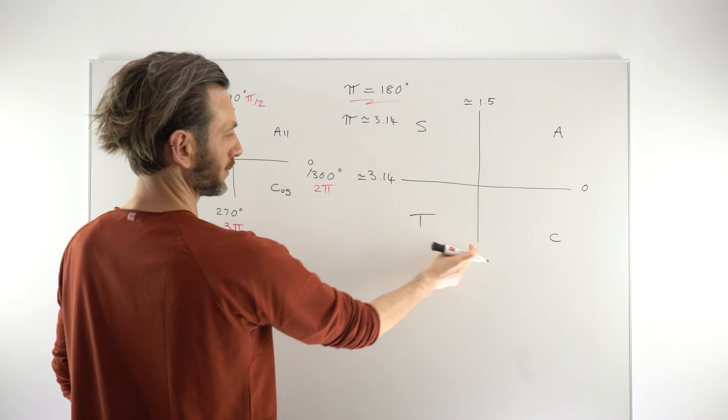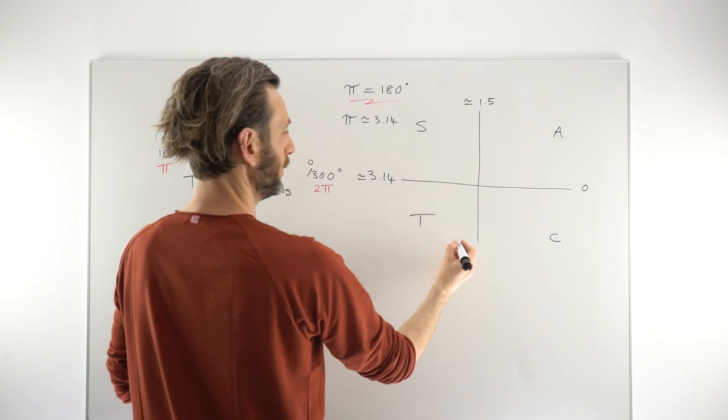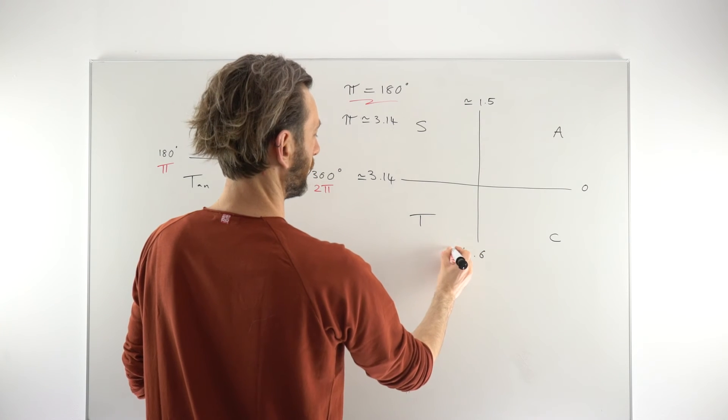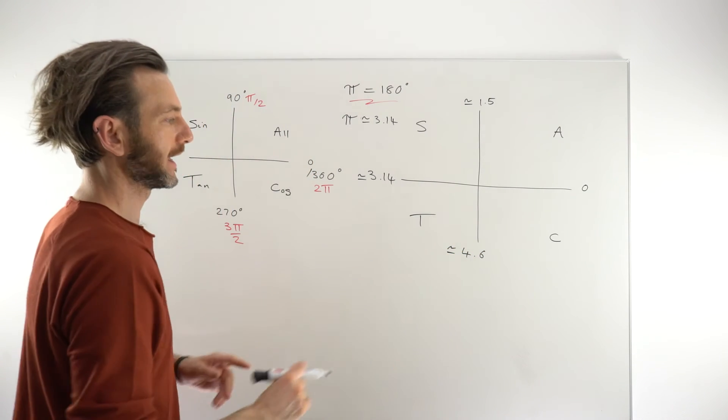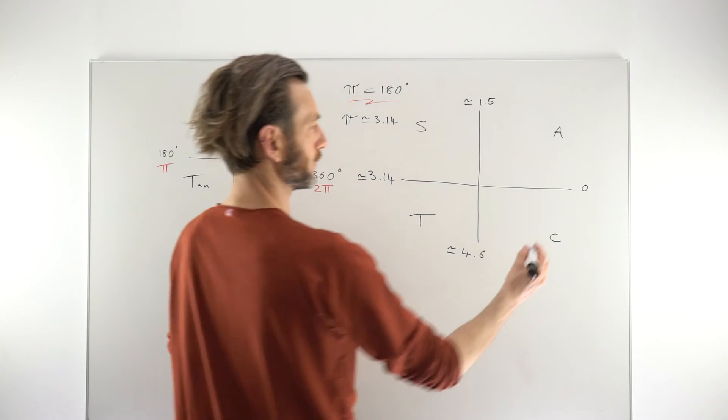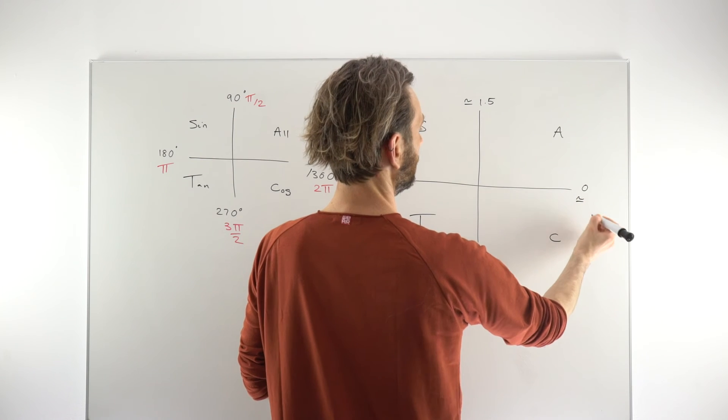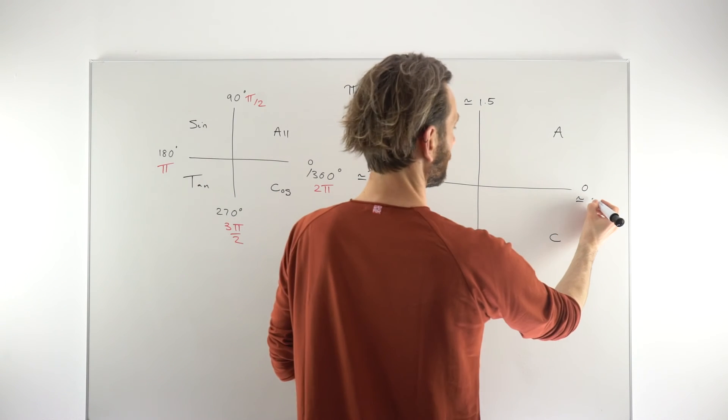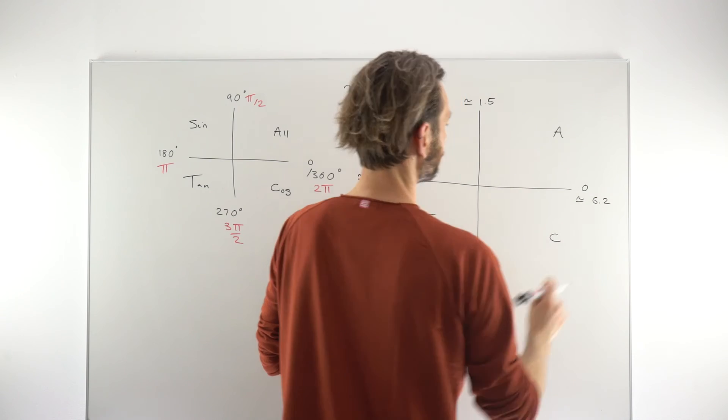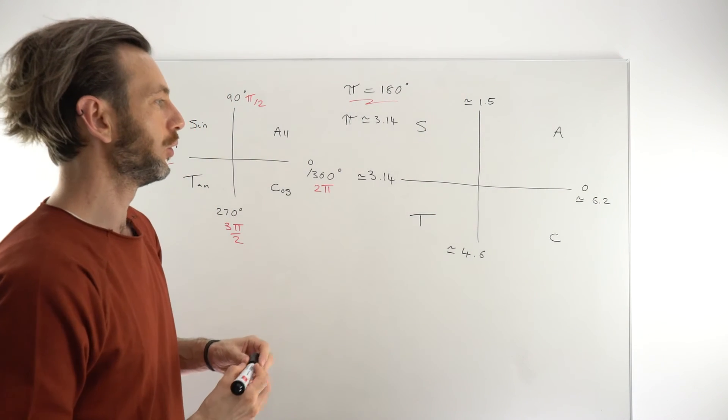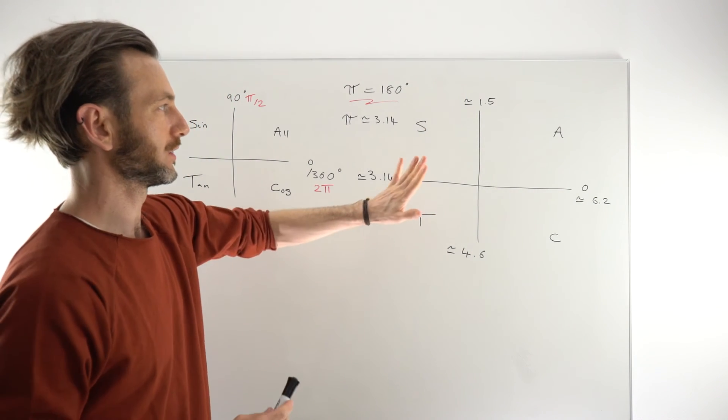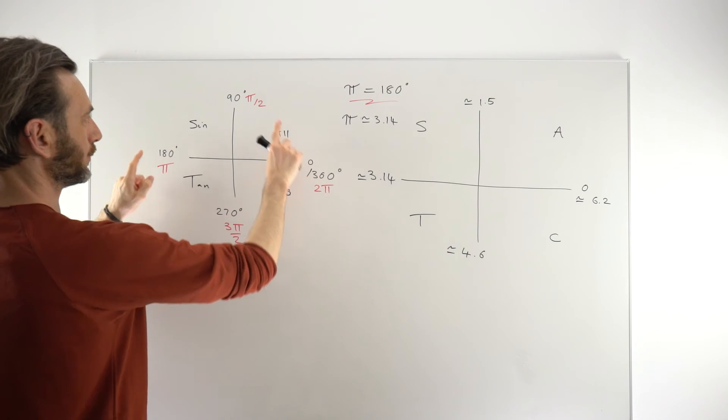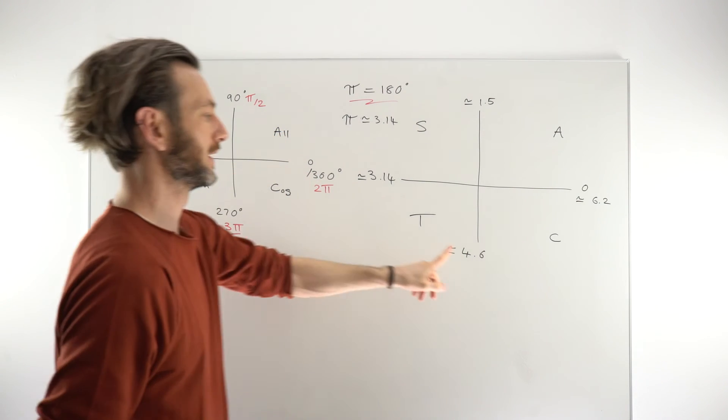So this would basically, this one here would be this one plus that one. So it's going to be approximately 4.6 radians. Again, it's just to get a rough feel for what it's going to be. It doesn't have to be too accurate. And finally, this one would be double this one, so it's going to be around 6.2 radians. And that's really all you need for reconceptualizing the CAST diagram from degrees to friendly radians to decimal radians.